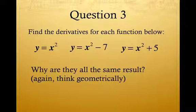Okay, so what's going on here? Well, if we think geometrically, this is the parabola, and this is the same parabola only shifted down seven, and this one's shifted up five. But what we find is, if we pick a value for x, the slope of the tangent line at that point is going to be the same here as it is here. This one is just going to be a parallel line to this one.